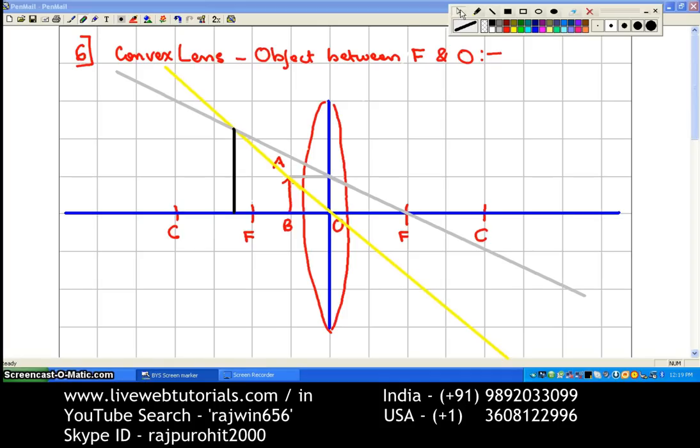So this will be drawn dotted. Now we are going to write down the characteristics of the image. I will just draw the image first. This is going to be A dash B dash.